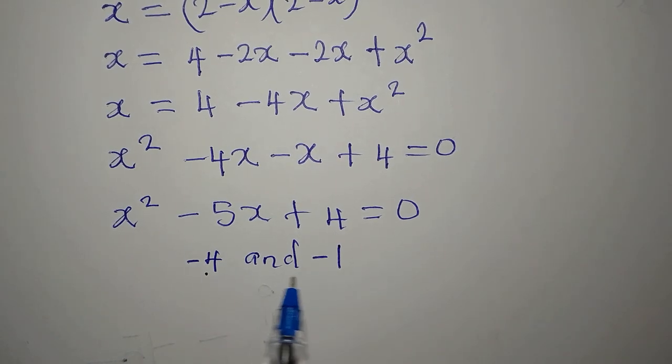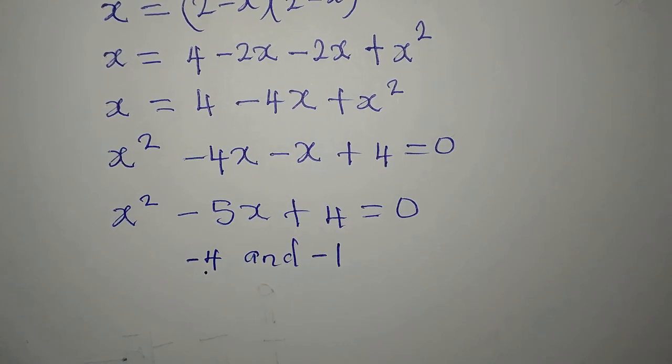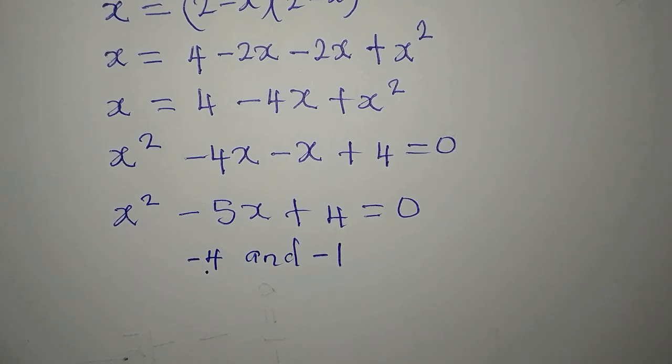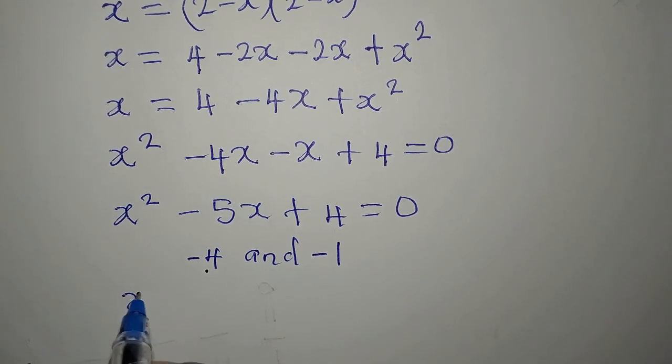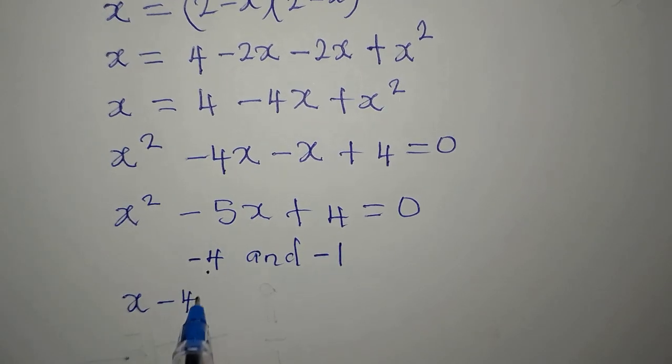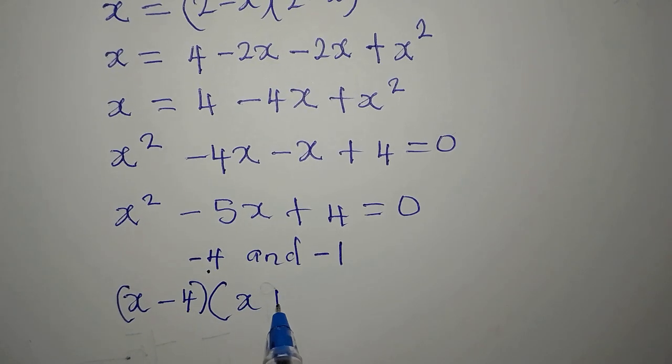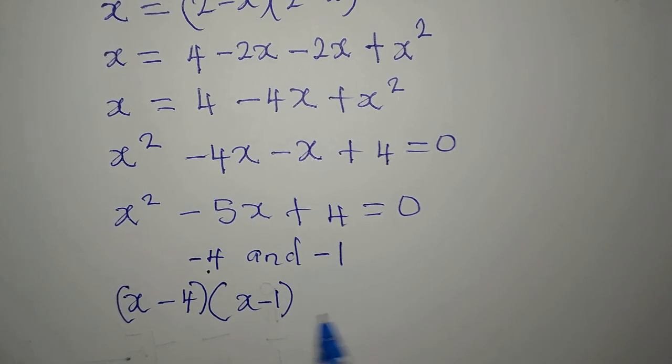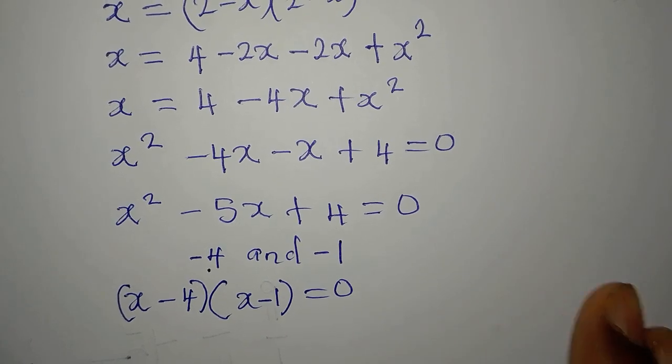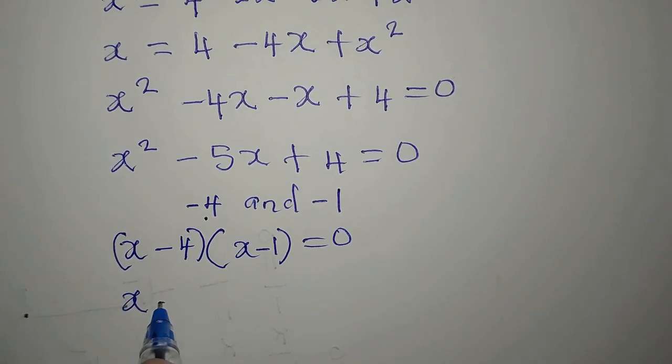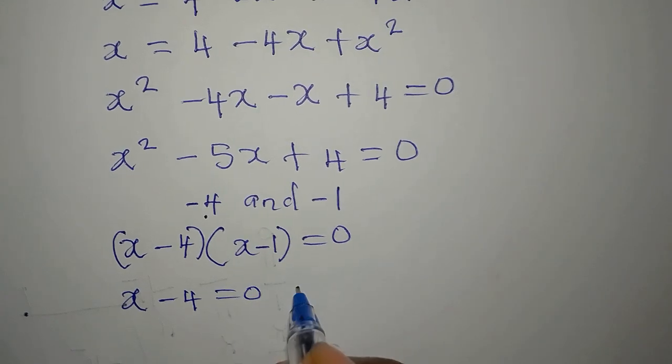Then minus 4 plus minus 1 will give us minus 5, so we are good. Now the factors will be x minus 4, that is the first factor. Second factor is x minus 1. So we equate this to 0, and it means that x minus 4 is equal to 0, or x minus 1 is equal to 0.